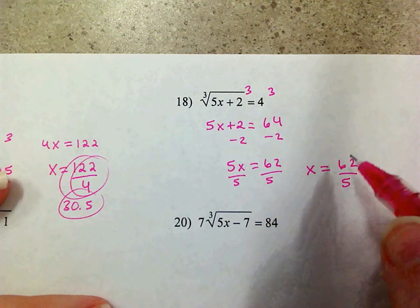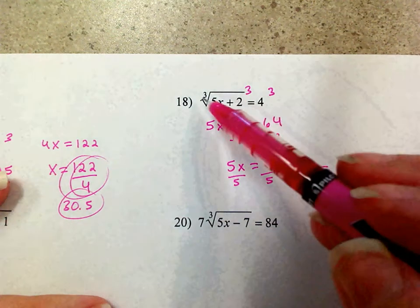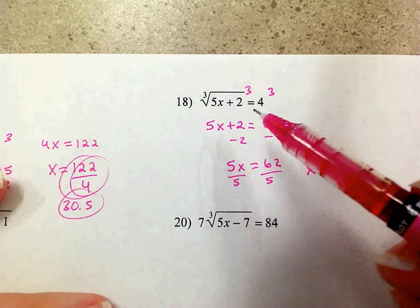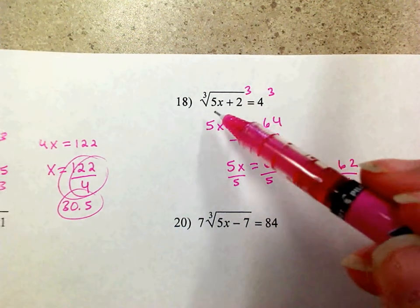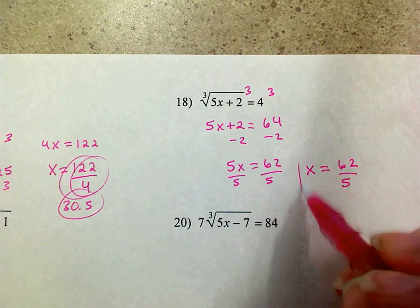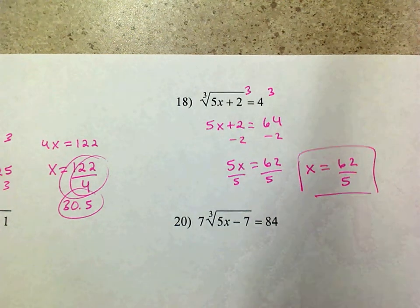In that case, like I said, it's a cubed root — I don't really have to worry about extraneous solutions, so there we go.